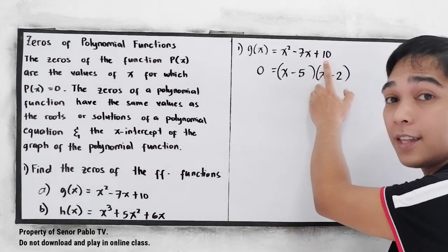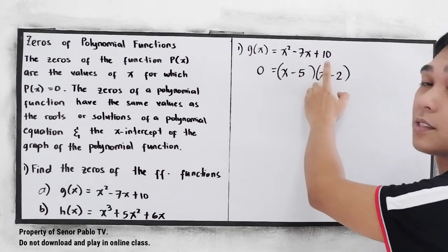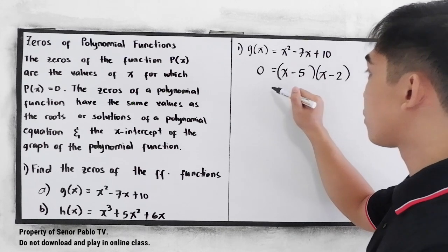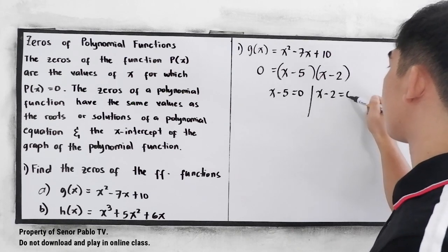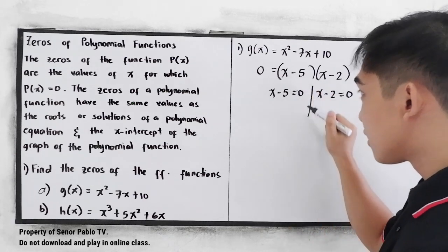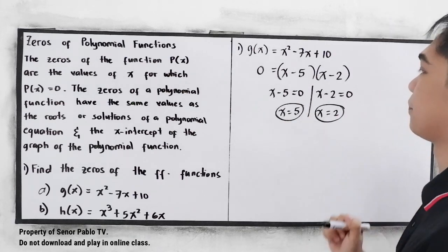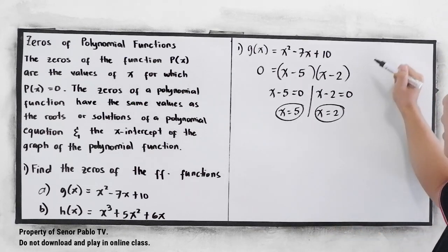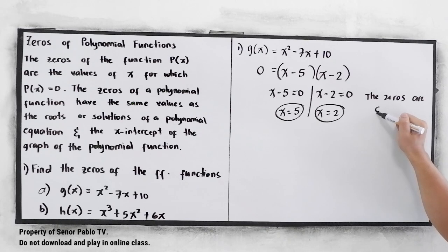Factors of positive 10, the sum must be negative 7. Let us check: negative 5 times negative 2 is positive 10, and negative 5 plus negative 2 is negative 7. Now equate to 0. So we have x minus 5 equal to 0, and x minus 2 equal to 0. Solving for x: x is equal to positive 5, and x is equal to positive 2. So these will be the zeros of our polynomial function. The zeros are 5 and 2.